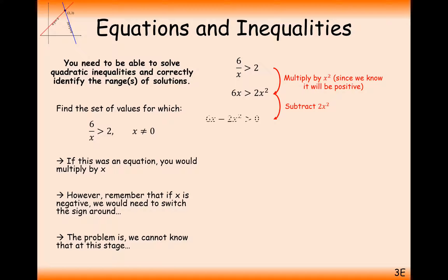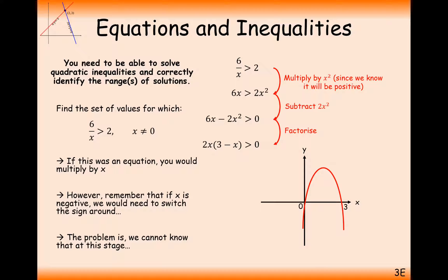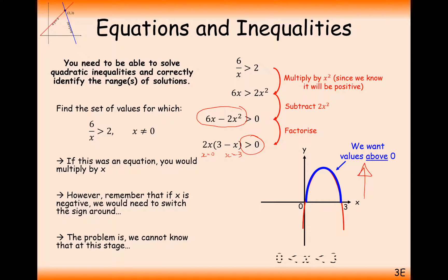Multiplying both sides by x squared cancels one x on the left to leave 6x, and the right-hand side becomes 2x squared. Taking 2x squared to the left gives us a quadratic inequality to solve using our three-point checklist. Solving gives intersection points at x equals 0 and x equals 3. The graph is upside-down, and we want the section bigger than the zero marker — one single region bounded by two values.